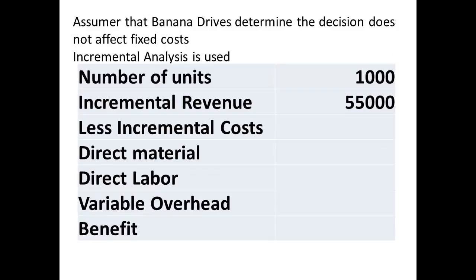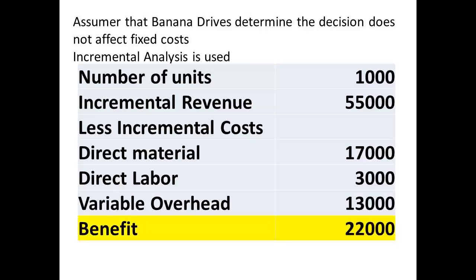The incremental revenue from selling an additional 1,000 units at $55 per unit is $55,000. The incremental costs are those for direct materials, direct labor, and variable overhead. There is no additional fixed cost because the fixed cost has already been allocated. This means there would be a benefit or incremental profit of $22,000 if the company takes the decision to produce the drives and sell them in this way. The company may not always be willing to take a decision like this. Companies producing designer labels will often choose not to do this if they believe it will weaken their own brand label.